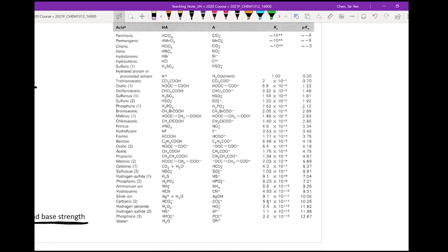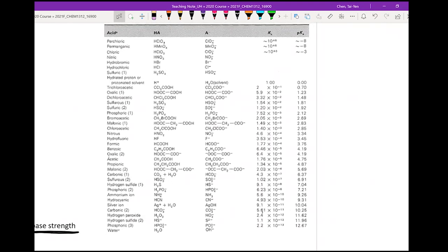This is a Ka table of many different substances, which you can find in your textbook. If you look at Ka, you'll see some have high numbers, some don't have any numbers. It pretty much cuts right here.